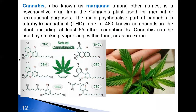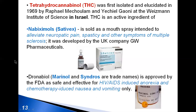Cannabis is a psychoactive drug from the cannabis plant used primarily for medication or recreational purposes. The main psychoactive part of cannabis is tetrahydrocannabinol, the structure of which you can see on the slide. Tetrahydrocannabinol was first isolated in 1969 in Israel.